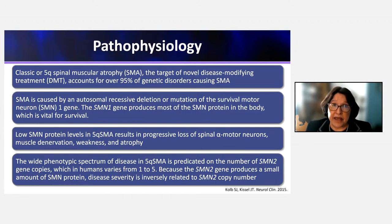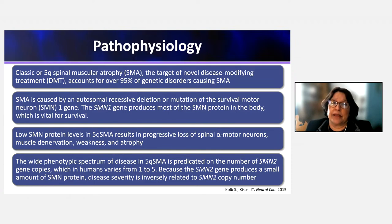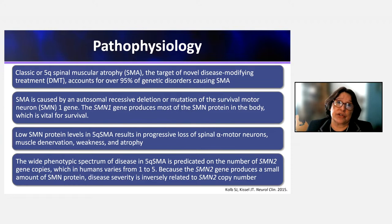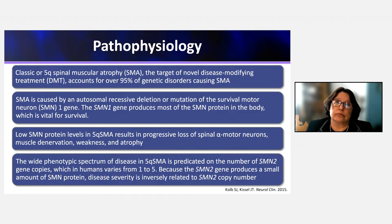There are several types of SMA, but the disease-modifying treatments only apply to 5Q-SMA, which comprises about 95% of disorders causing SMA. SMA is the result of deficiency in SMN protein. The genetic defect is an autosomal biallelic mutation of the survival motor neuron gene — either a homozygous mutation or a compound heterozygote with a point mutation and a deletion.